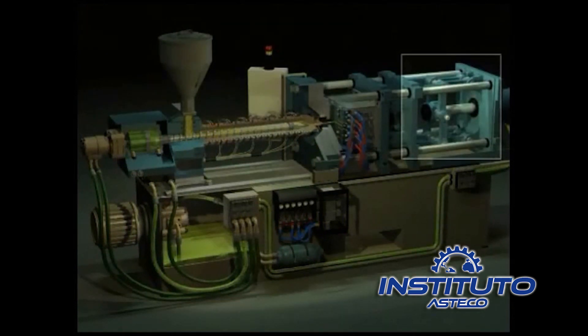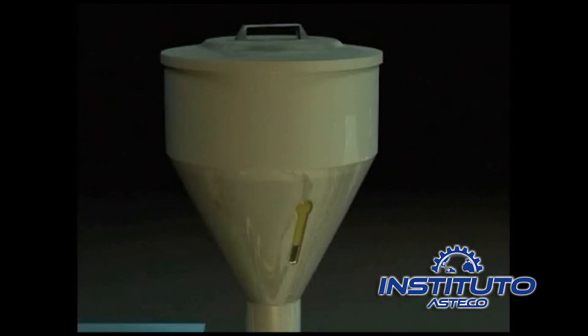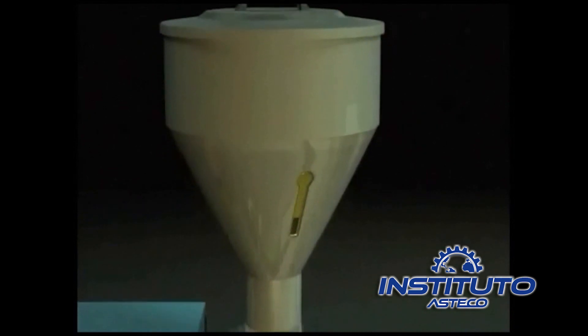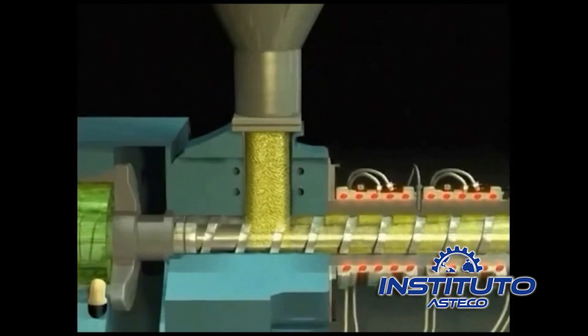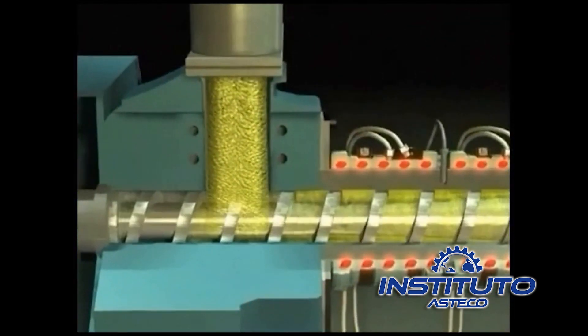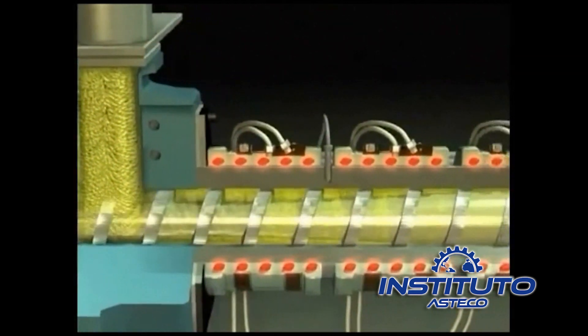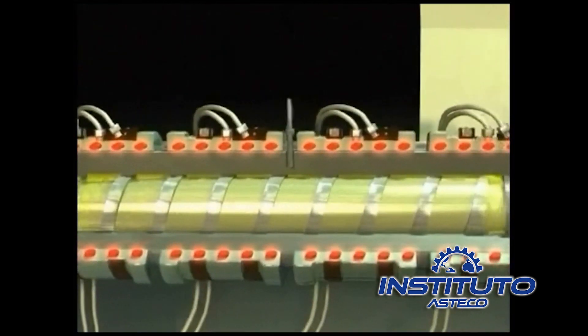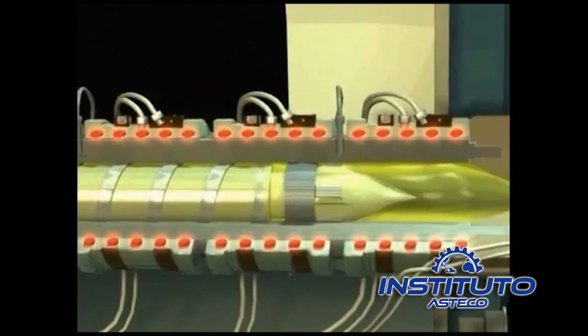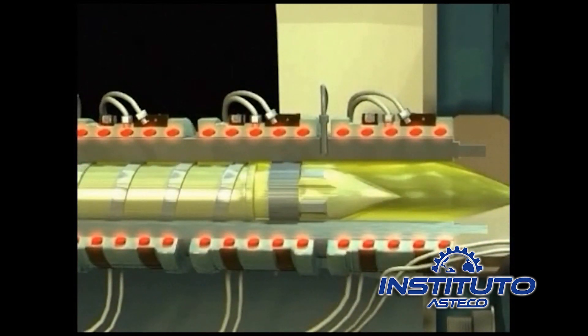The plastic raw material is stored in the hopper. From the hopper, the plastic falls onto the rotating screw where it is conveyed forward by the flights of the screw and is gradually melted as it moves forward. When enough melted plastic has accumulated ahead of the screw, the screw stops rotating.